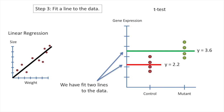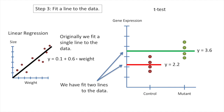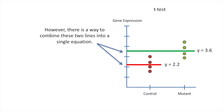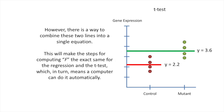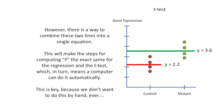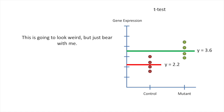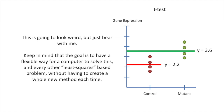We have fit two lines to the data. Originally when we did the regression, we fit a single line to the data. However, there is a way to combine these two lines into a single equation. This will make the steps for computing F the exact same for the regression and the t-test, which in turn means a computer can do it automatically. This is key because we don't want to do this by hand, ever. Keep in mind that the goal is to have a flexible way for a computer to solve this and every other least squares-based problem without having to create a whole new method each time.